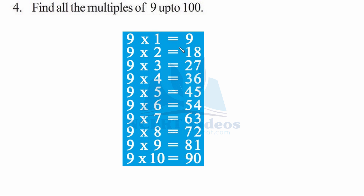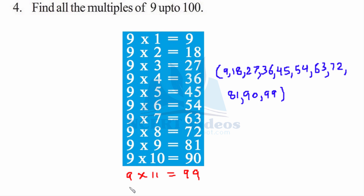Fourth: find all the multiples of 9 up to 100. We will write the table of 9 up to 11 times. So the multiples are 9, 18, 27, 36, and so on. We have written only up to 90, so we need one more: 9 times 11 gives you 99. We did this because we were asked up to 100. These are the multiples written in blue. If we write 9 into 12, it gives you 108, but it is not required because 108 is greater than 100. That's why we only consider the ones up to 99.